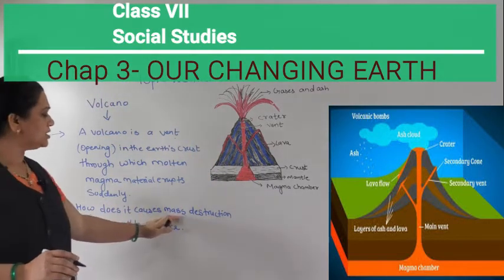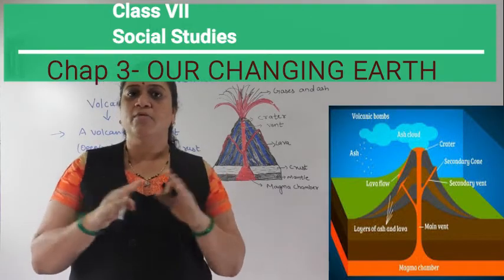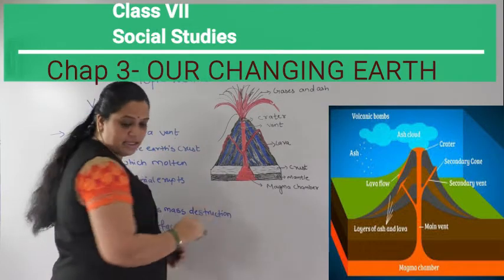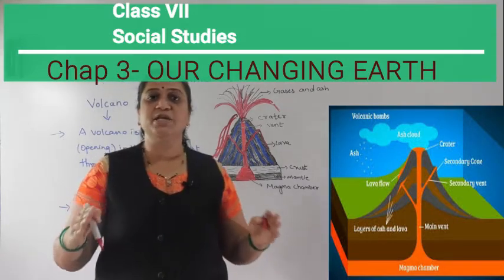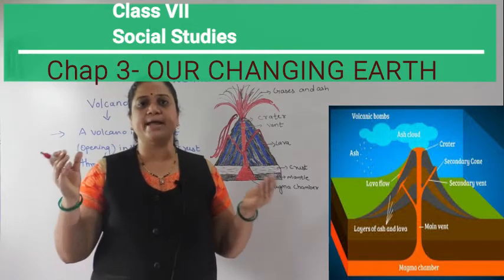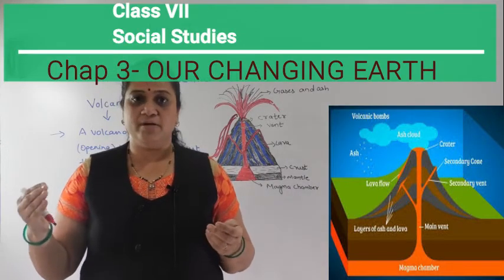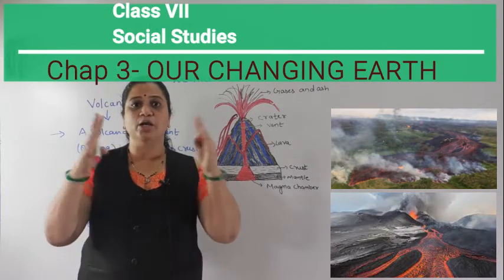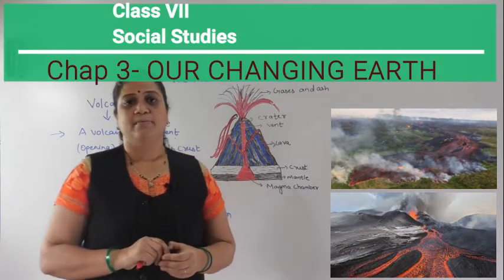How does a volcano cause mass destruction? When the hot lava flows across the earth's surface and passes through forests, the forests are burned because lava has very high temperature. The area near the volcano gets burned, animal life is harmed, and people living near volcanic areas are also affected by the heat of the volcano.